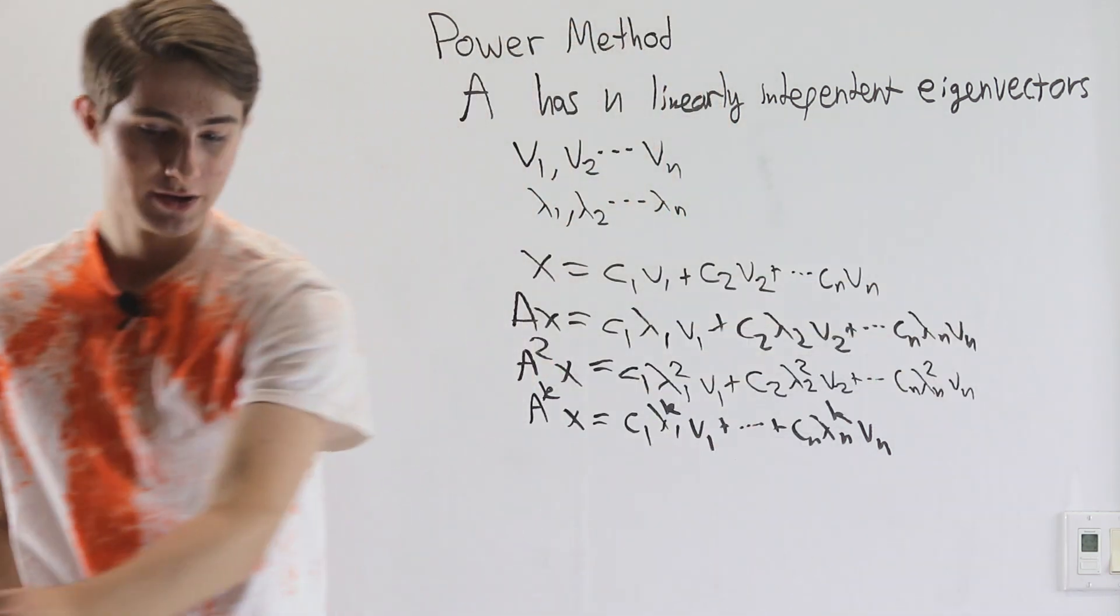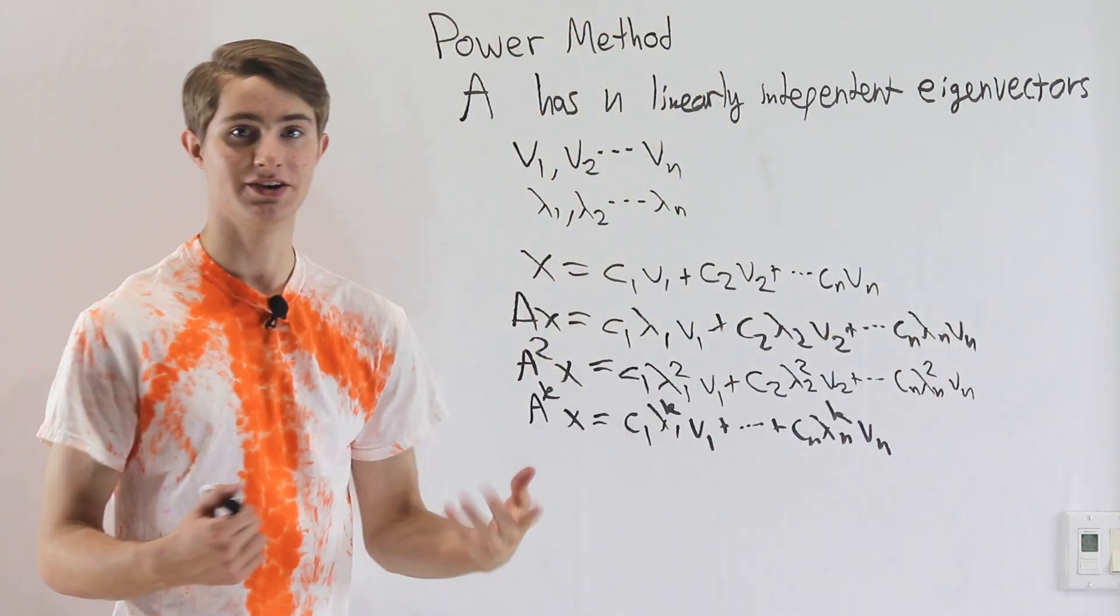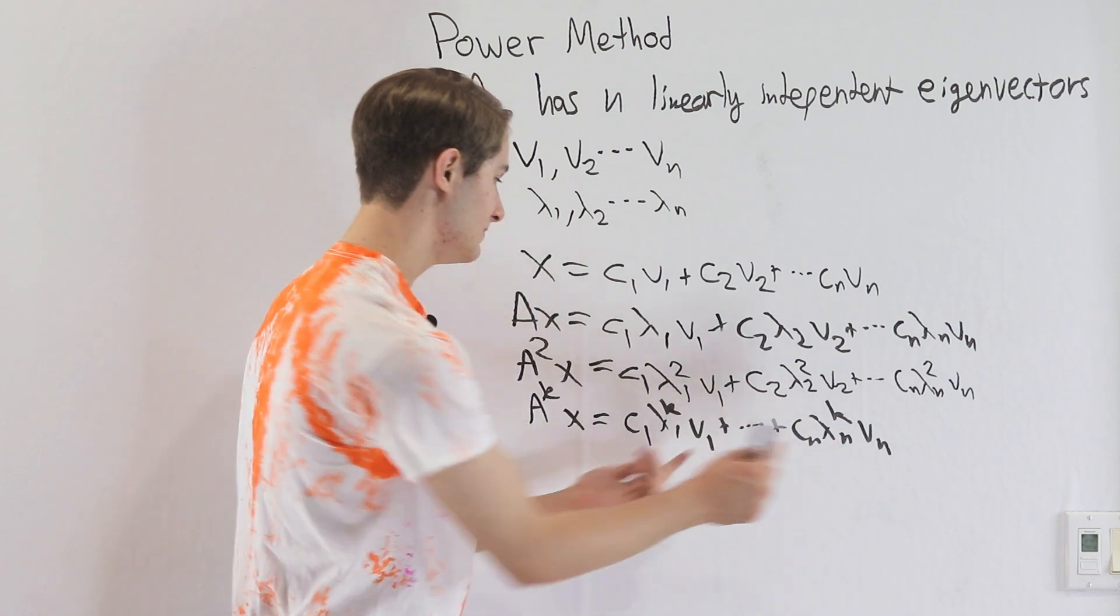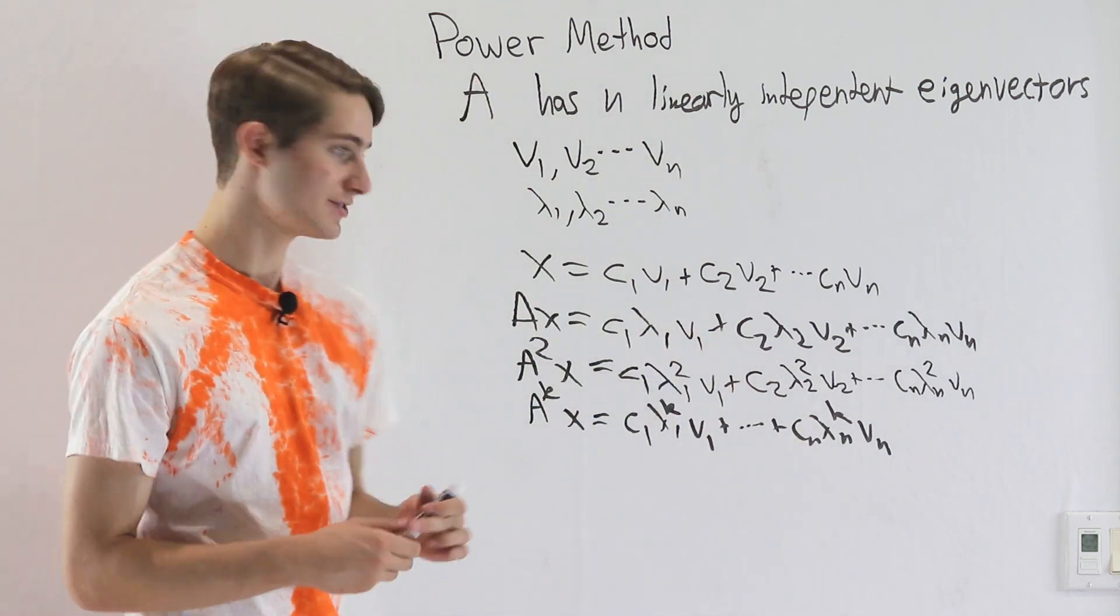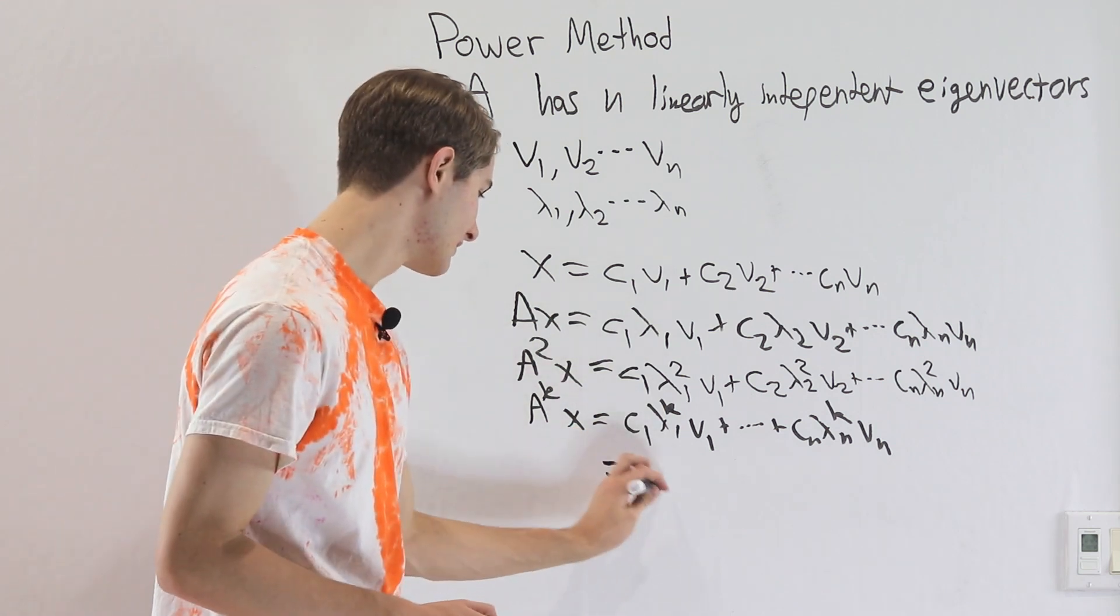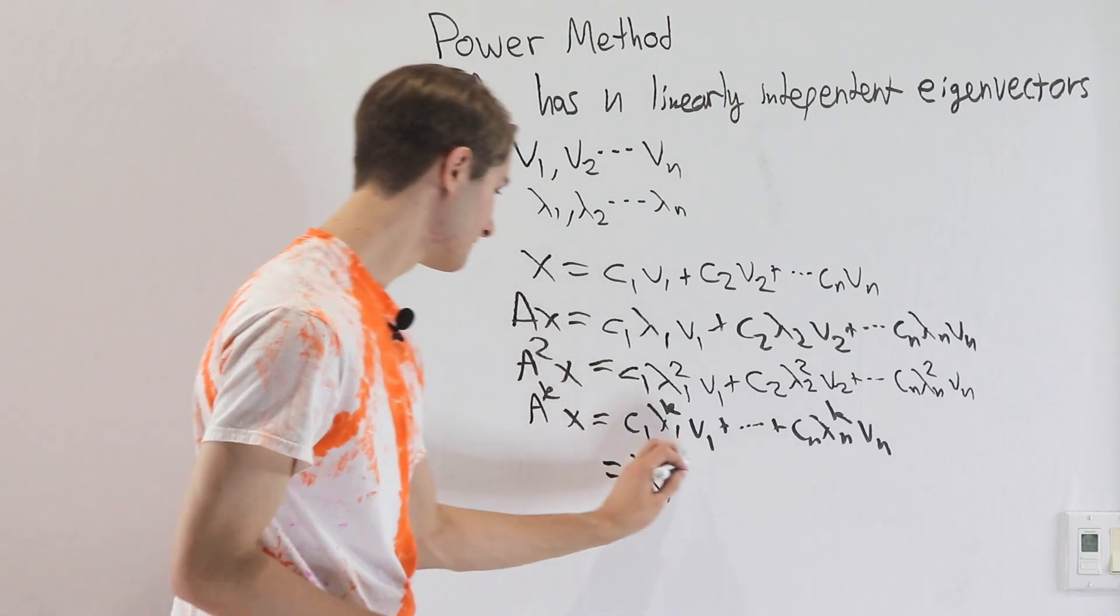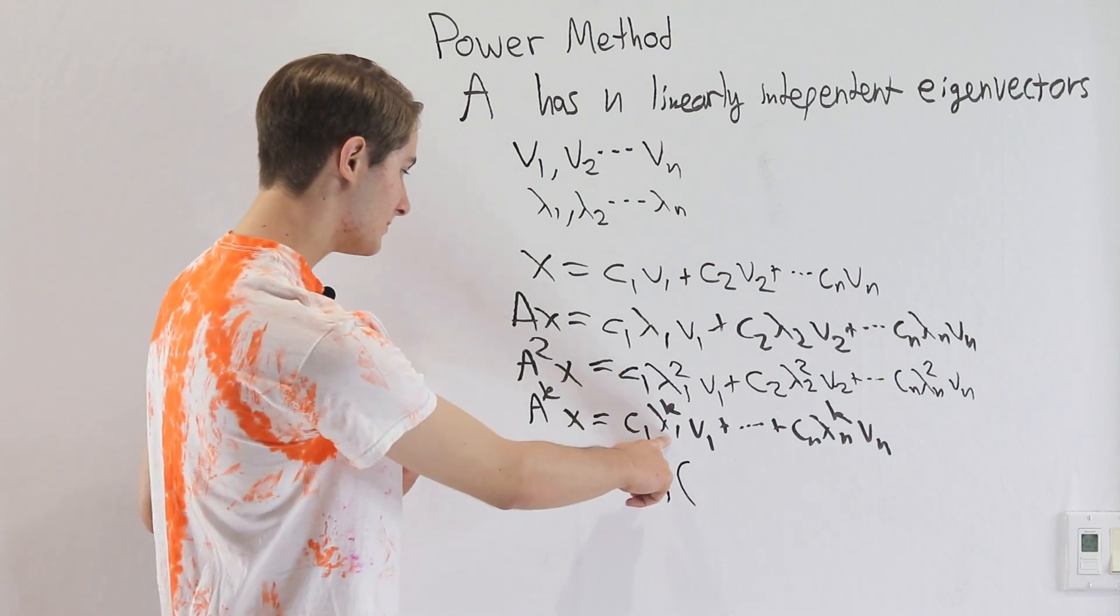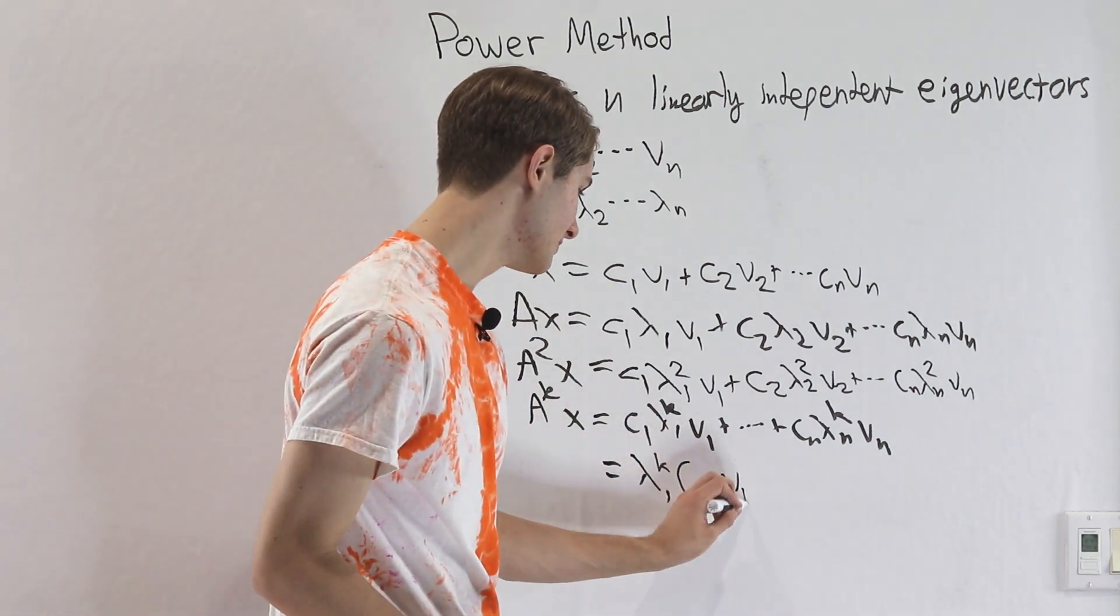And we're just going to assume that lambda 1 is the biggest eigenvalue, because these numbers don't really mean anything, we could flip them around. So lambda 1 is the biggest. What we're going to do is factor out lambda 1 to the k on this side of the equation. So if we factor out lambda 1 to the k, this first term just becomes c1 v1.